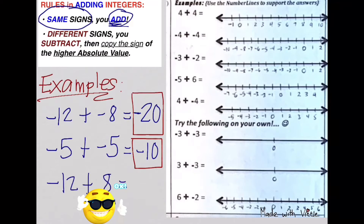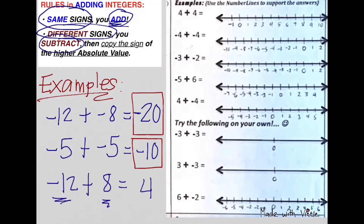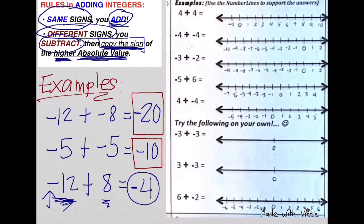Let's have another example: negative 12 plus 8. You ask yourself, are they of the same signs? No — one is negative, one is positive. So what do we do with different signs? You're going to subtract. The difference between 12 and 8 is 4. But whose sign do we copy? We always copy the sign of the one with higher absolute value or distance from 0. 12 is farther from 0, and its sign is negative. Therefore, our final answer is negative 4.